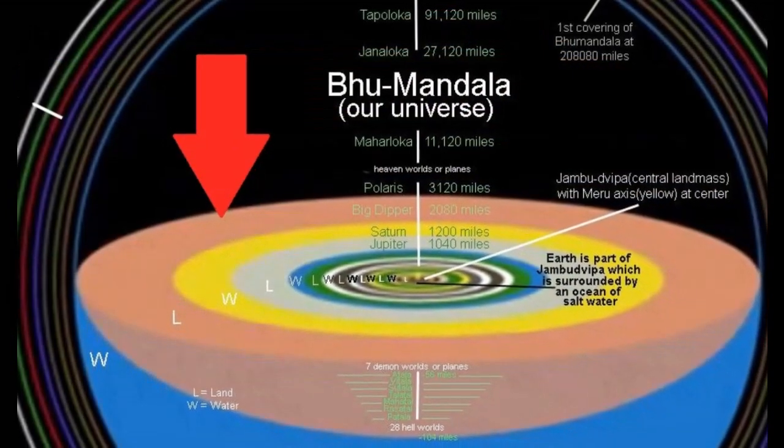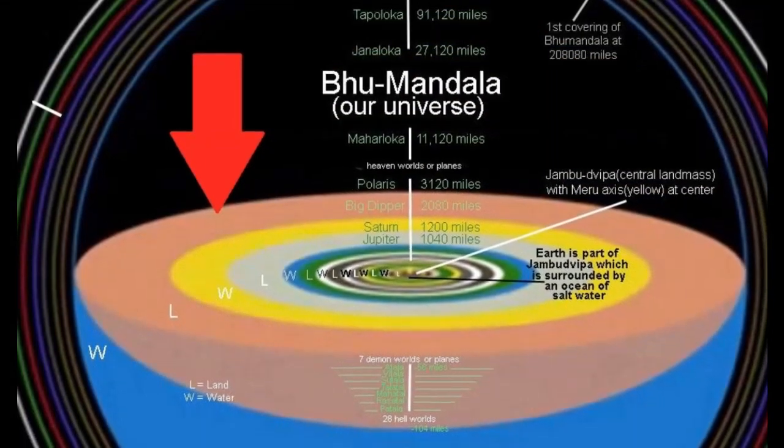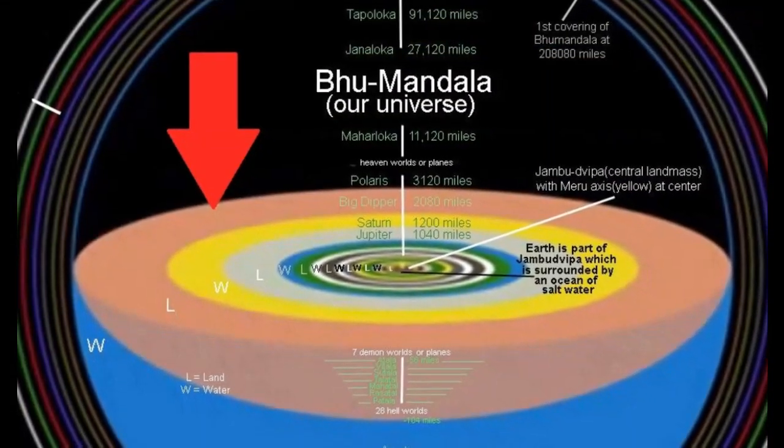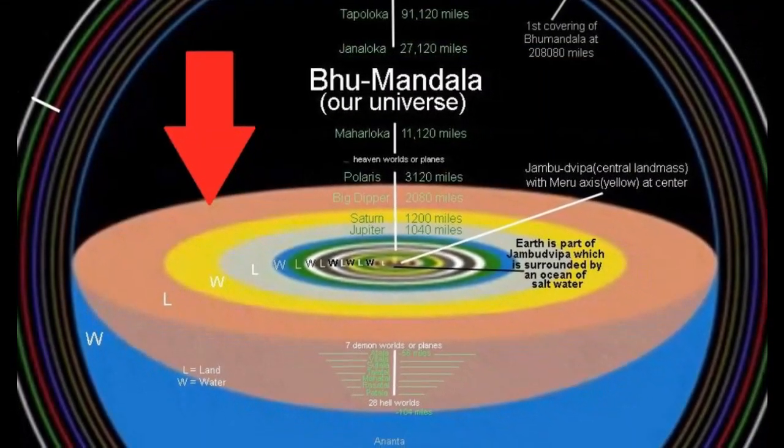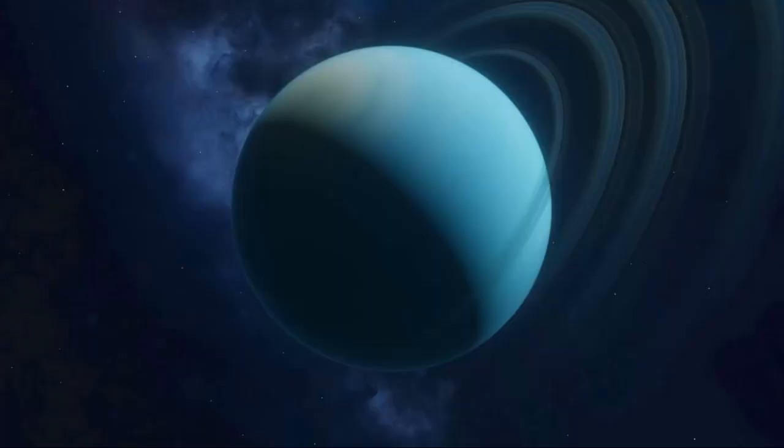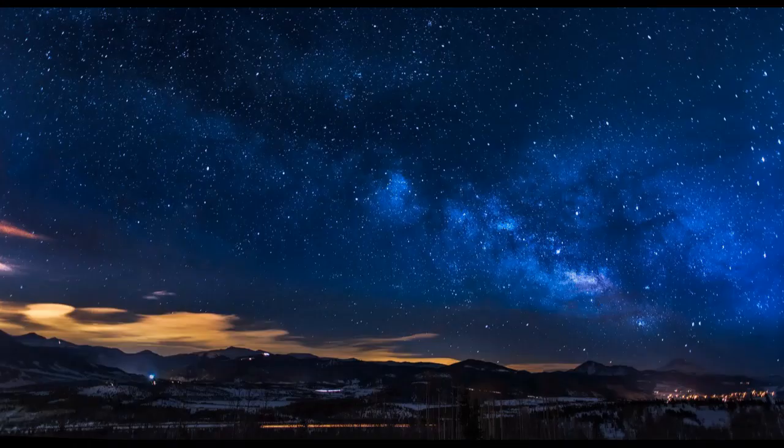The furthest extent of Bhumandala's dark region is 2 billion miles from Earth. As mentioned, a distance just beyond that of Uranus. Yet, the vertical axis of the Bhumandala universe is said to contain millions of distant stars.